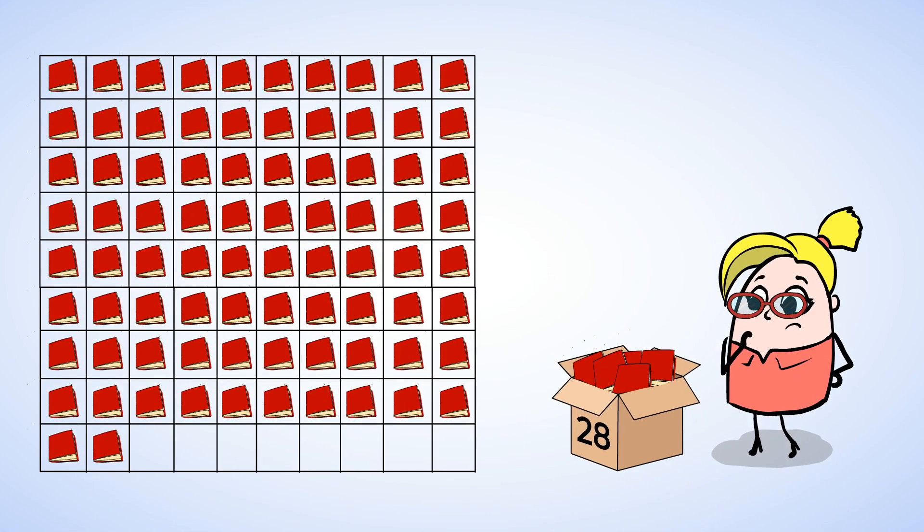Oh, a box of notebooks. The box says 28 on it. Hmm, are there really 28 notebooks inside? It looks like a lot more. Let's count them to check. Now they're in rows of 10 except for the last row. 10, 20, 30, 40, 50, 60, 70, 80.